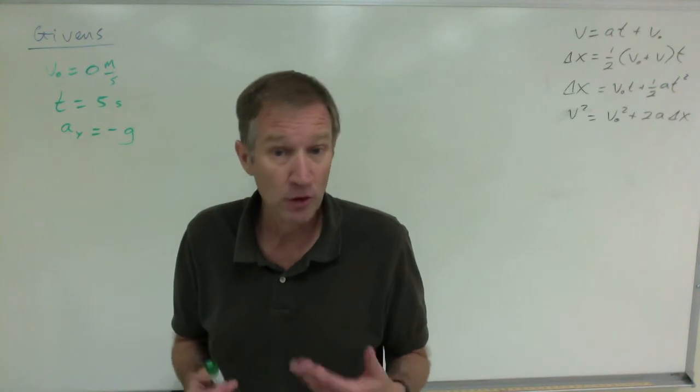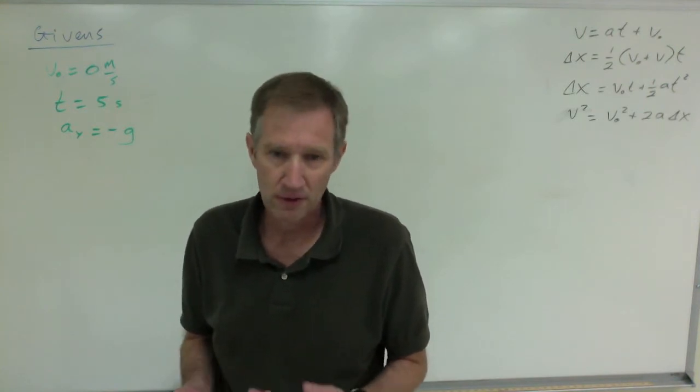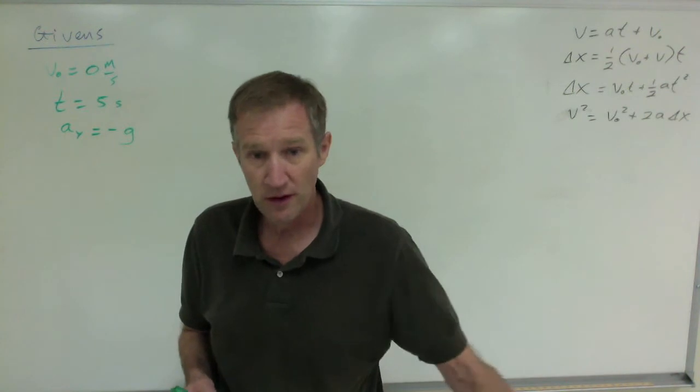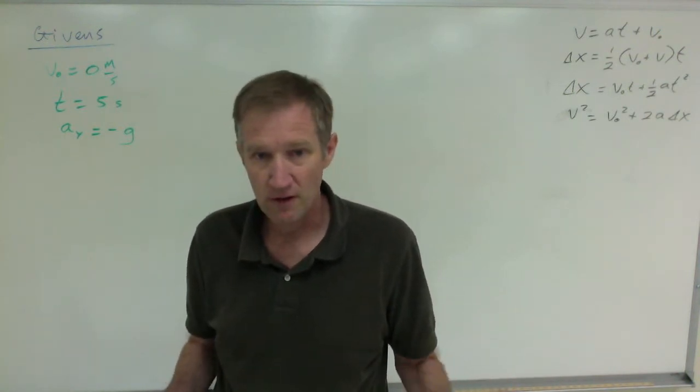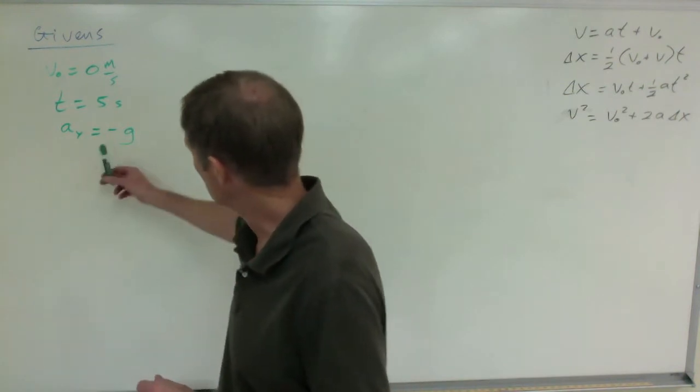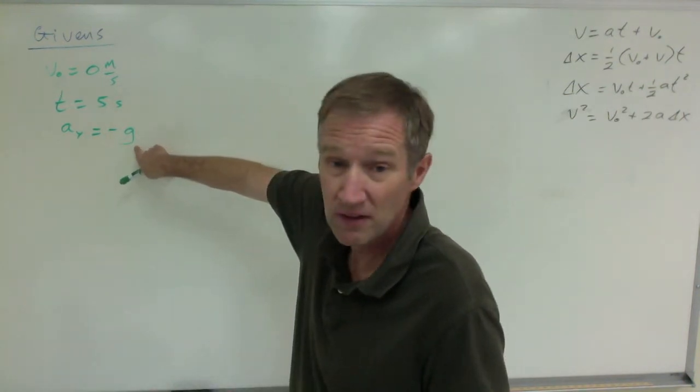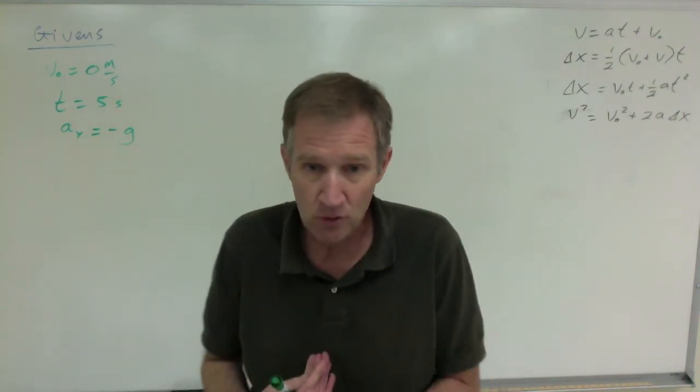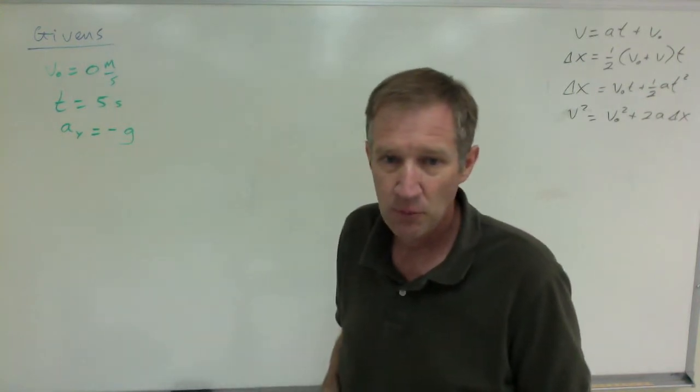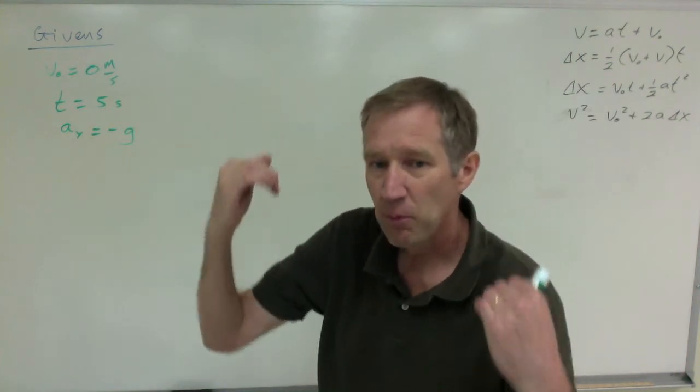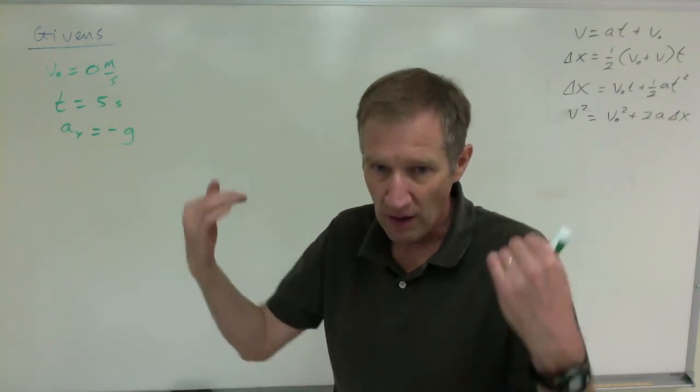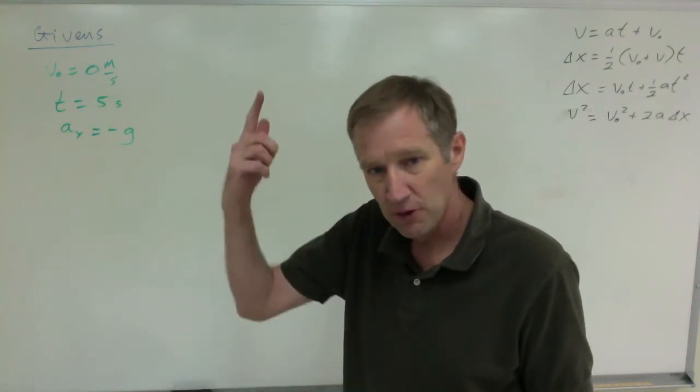It's also different near different planets. The moon has its own acceleration due to gravity, which is less than the earth's. Mars has its own gravity, the Sun has its own gravity. This is the acceleration near the surface of the earth, where we are. In my classroom it's roughly 9.8 meters per second squared. We're using negative because it's being pulled down. Gravity acts downwards and we're saying up is positive, therefore down is negative.